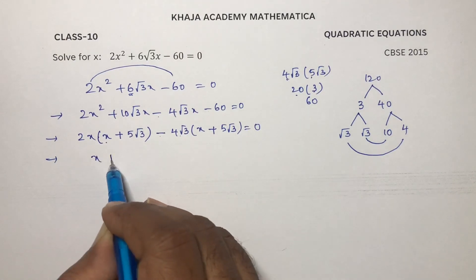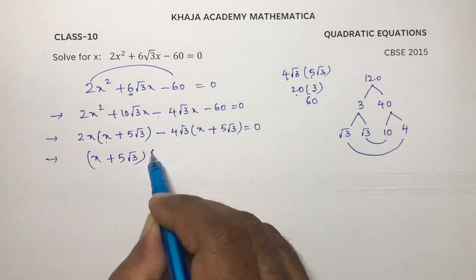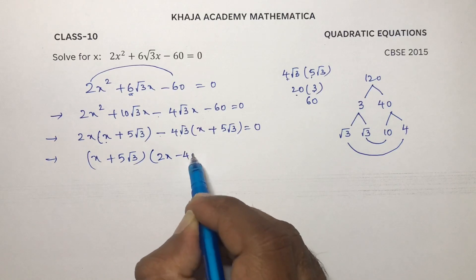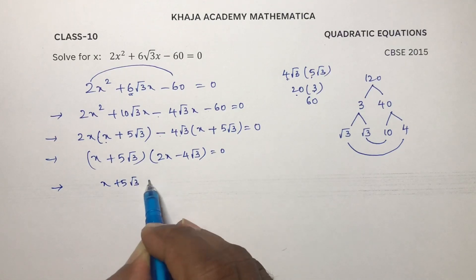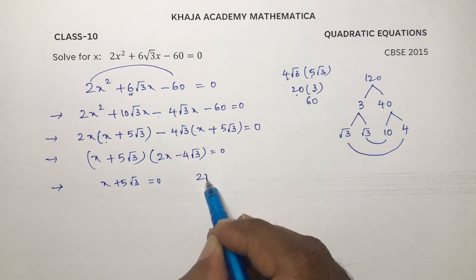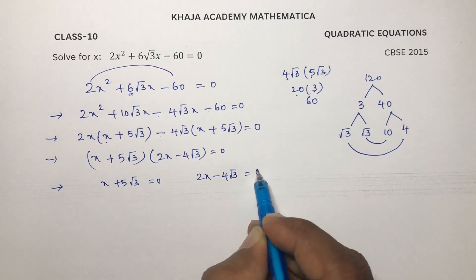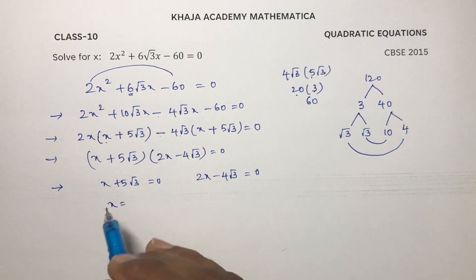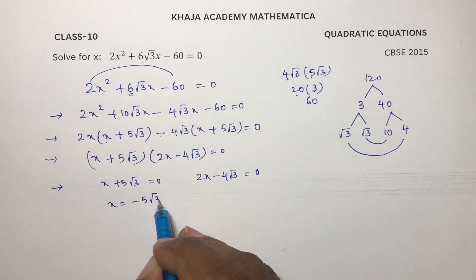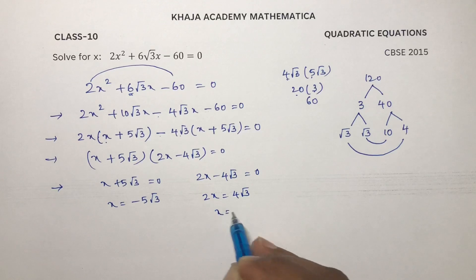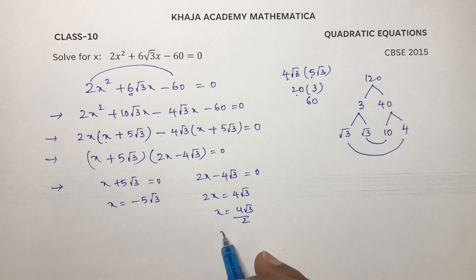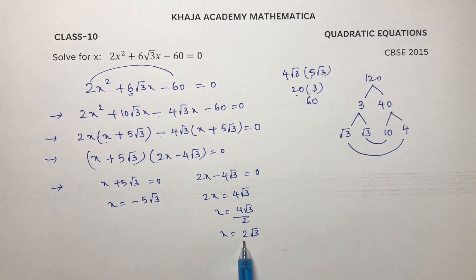From here, taking x plus 5 root 3 common: so 2x minus 4 root 3 and x plus 5 root 3 equals 0. So x equals minus 5 root 3, and 2x equals 4 root 3, giving x equals 4 root 3 by 2, which is x equals 2 root 3. So minus 5 root 3 and 2 root 3 are the two values for x.